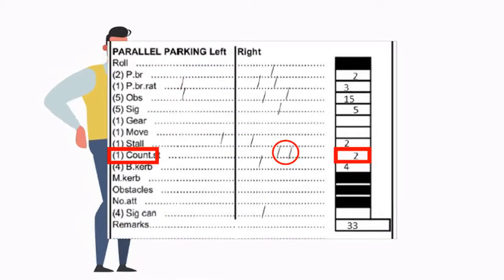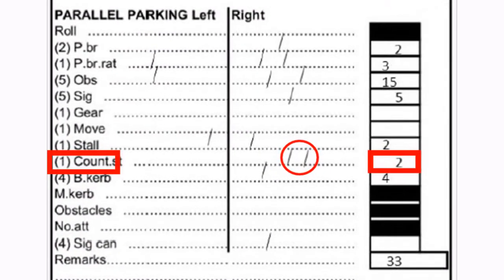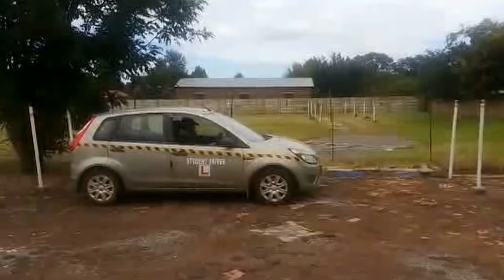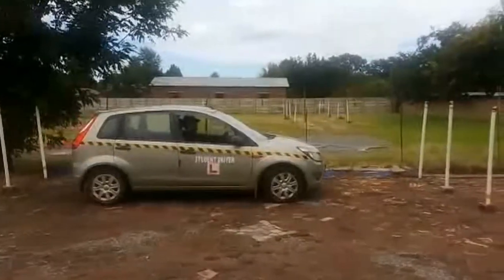Next, the student got two points scored for not straightening the front wheels before stopping in the parking bay. When parallel parking to the right, you should straighten the wheels while the car is in motion.